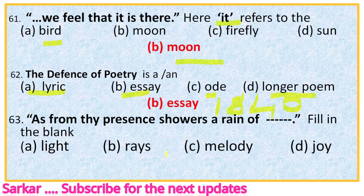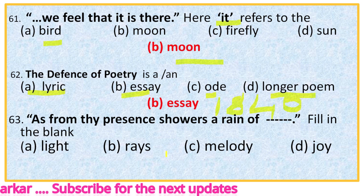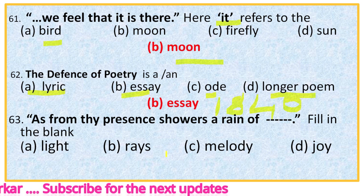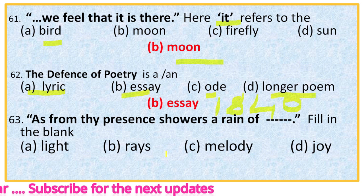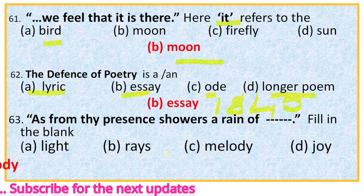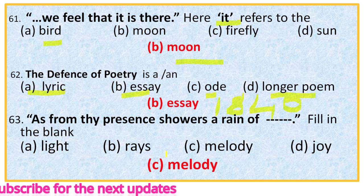Question 63: 'As from thy presence showers of rain of ___' — fill in the blank. The options are light, rays, melody, joy. The full line is 'as from thy presence showers of rain.' The right option is C, melody.